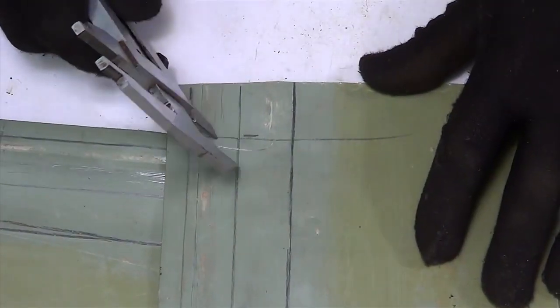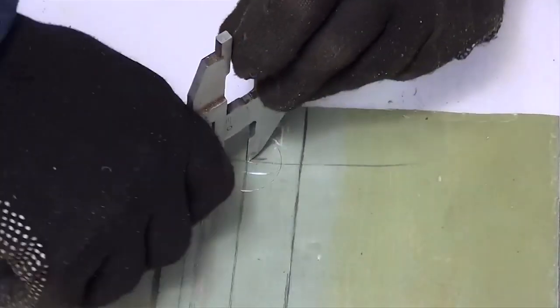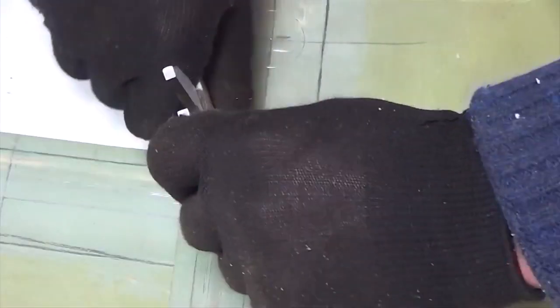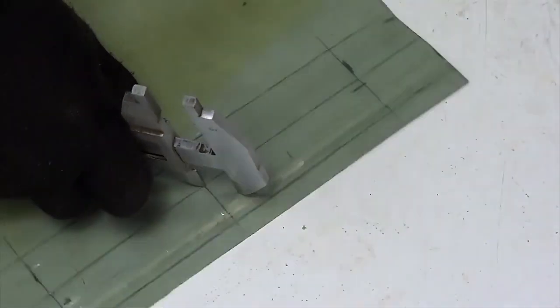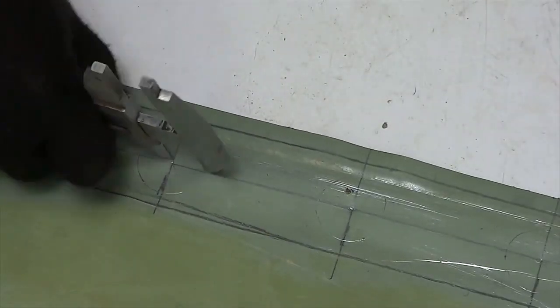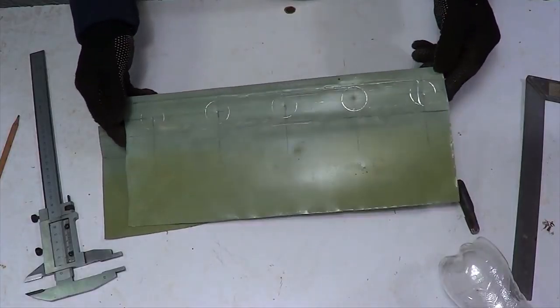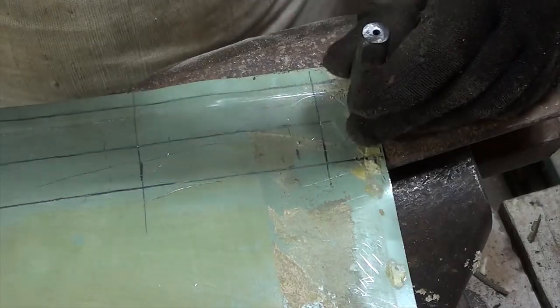We set the caliper distance equal to the radius of the neck and draw a circle with the center at the points marked earlier. We do the same on the second length.